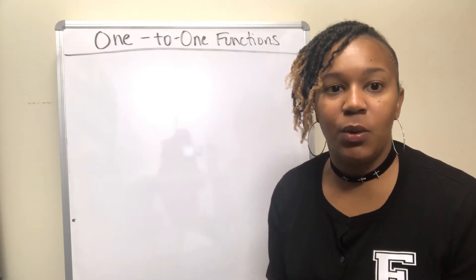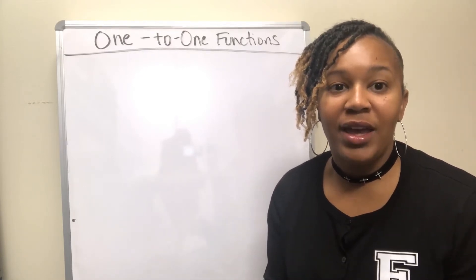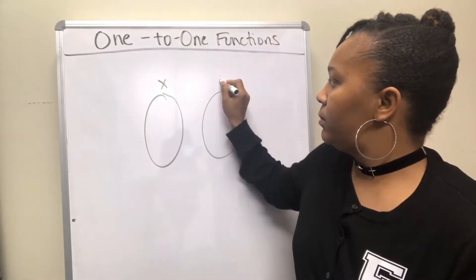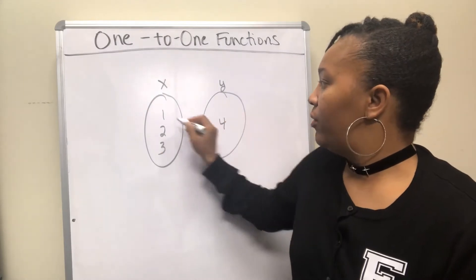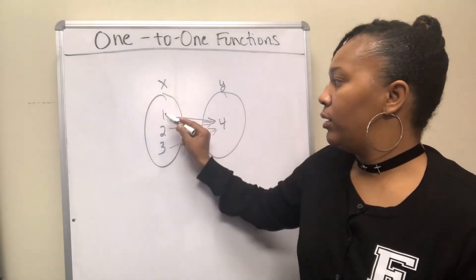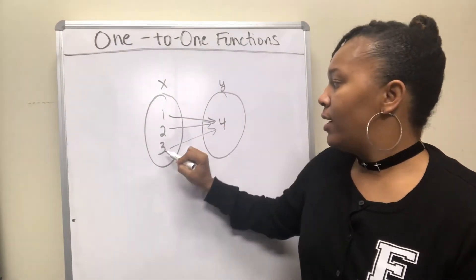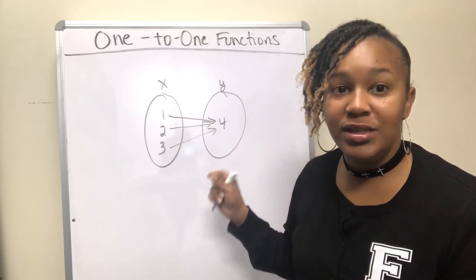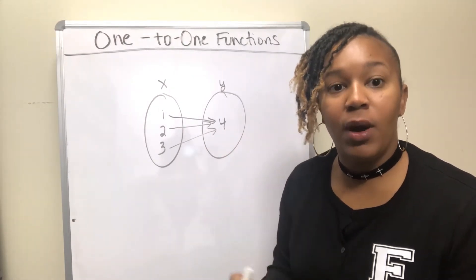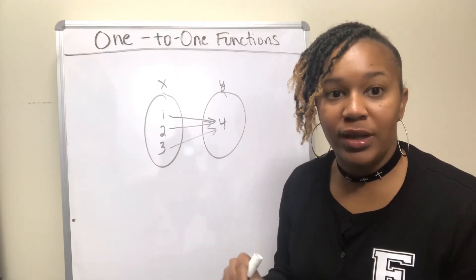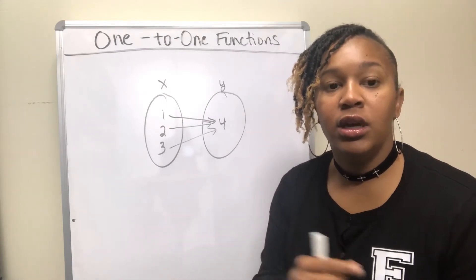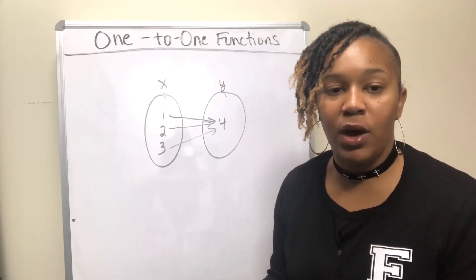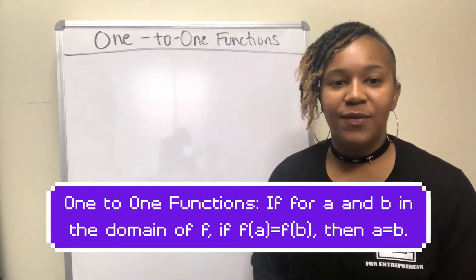Now in order to be a one-to-one function, it first has to be a function — each X has to map to one Y. But also each Y can only have one X. So in a mapping, if multiple X values all map to the same Y, that is a function but it is not one-to-one. The one-to-one function means each X maps to one Y and each Y is only mapped to from one X.